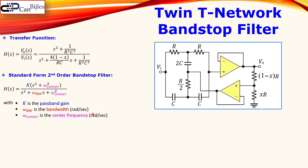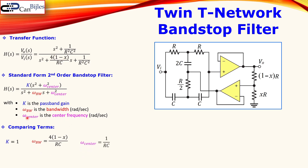Now if we compare the terms of this transfer function for this circuit with the standard form of the band stop filter transfer function, we can recognize the following: k must equal one, because the expressions are exactly the same without k. The omega bandwidth is four times (1 minus x) over RC. We also see that omega_center squared equals one over R squared C squared, so omega_center itself is one over RC.